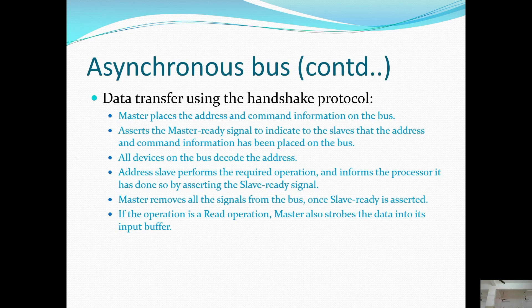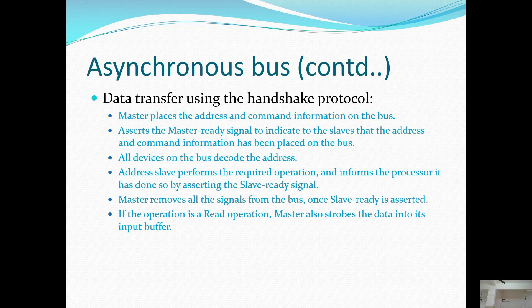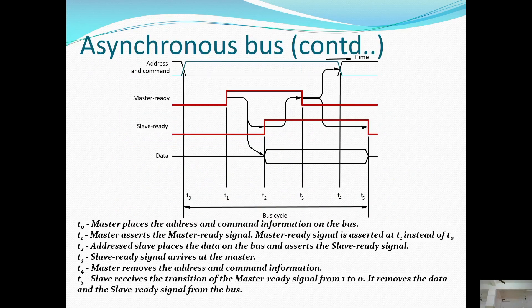In data transfer using the handshake protocol, the master places the address and command information on the bus and asserts the master ready signal to indicate that address and command information has been placed on the bus. All devices on the bus record the address; the addressed slave performs the required operation and informs the processor it has done so by setting the slave ready signal. The master removes all signals from the bus once slave ready is accepted, and for a read operation the master also strobes data into its input buffer.